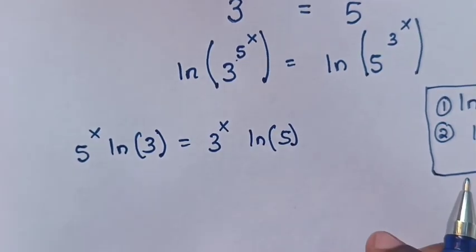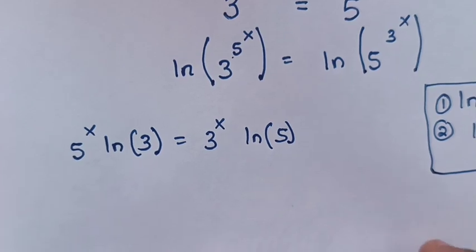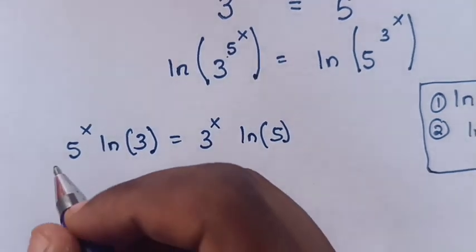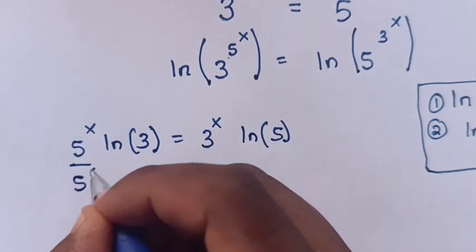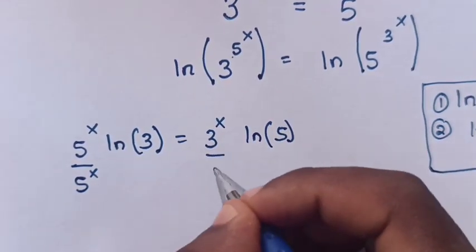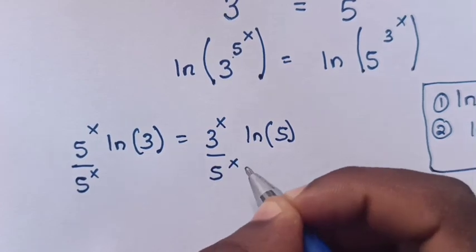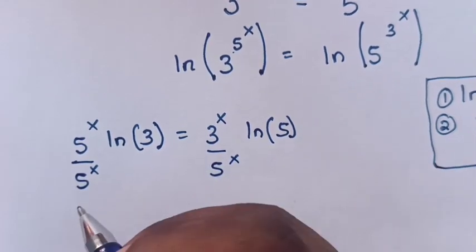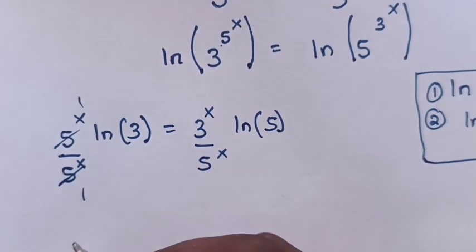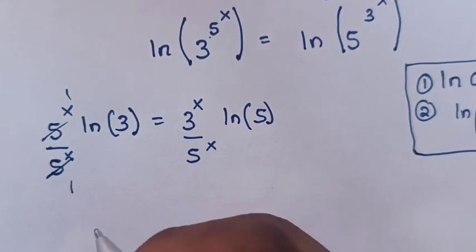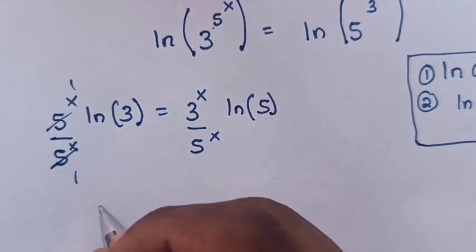Next step, we will divide both sides by 5^x. So 5^x on this side and 5^x on the other will cancel, leaving 1 and 1.